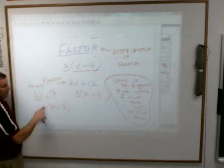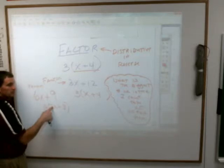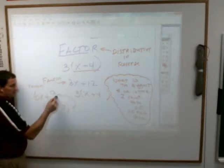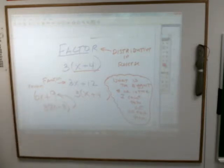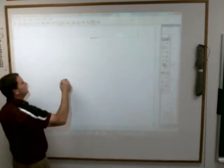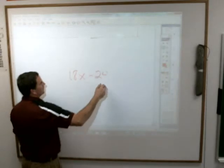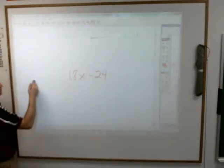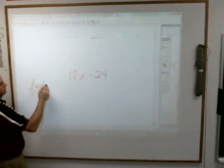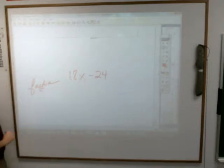In other words, if I would re-multiply this using the distributive property, I would get what I started off with. And again, the reasons for doing that will come up later in your life. Right now we're just practicing doing that. How about this one? 18x minus 24. And you're asked to factor 18x minus 24.